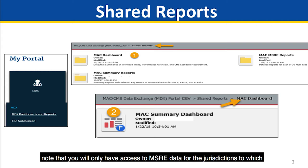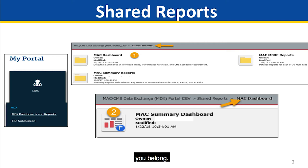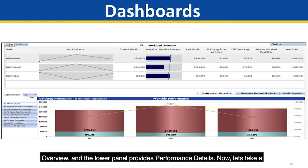It's important to note that you will only have access to MSRE data for the jurisdictions to which you belong. The Dashboard is divided into two panels: the top is the Monthly Workload Overview, and the lower panel provides performance details. Now let's take a closer look at each panel. Please note the data shown here is not real.